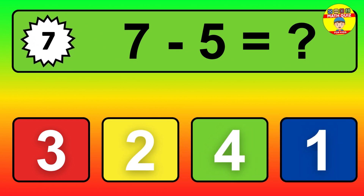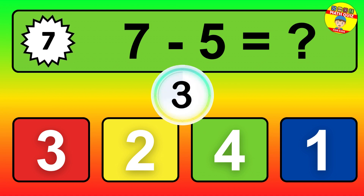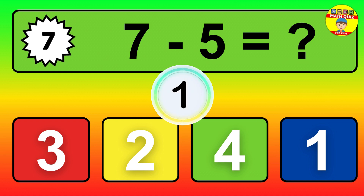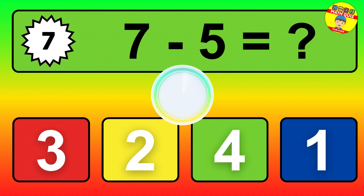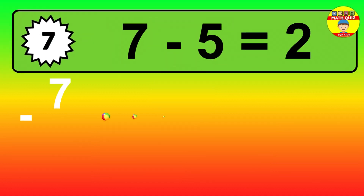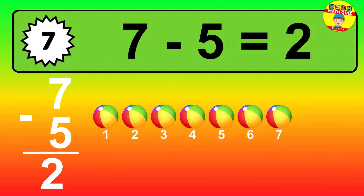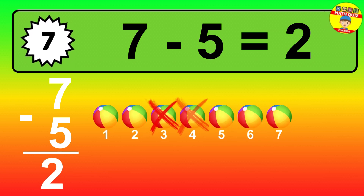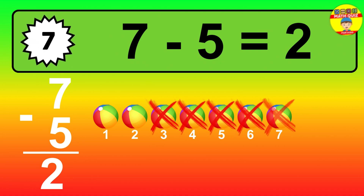Question 7. 7 minus 5 equals what? So the answer is 7 minus 5 is 2. Let's count it. 1, 2.